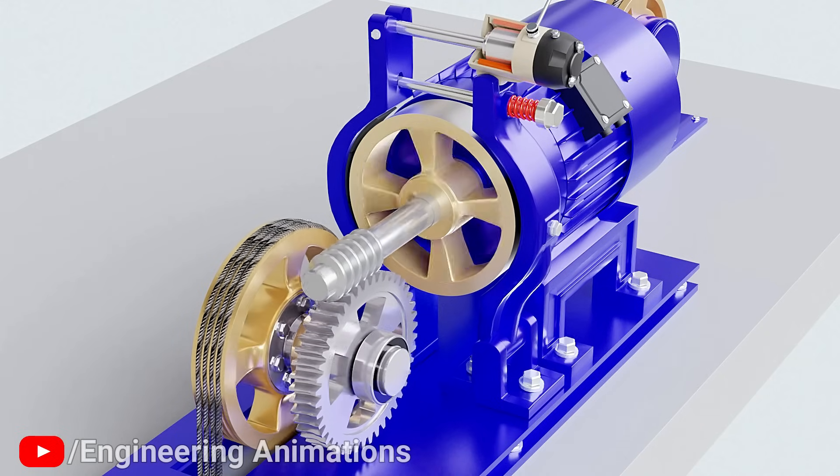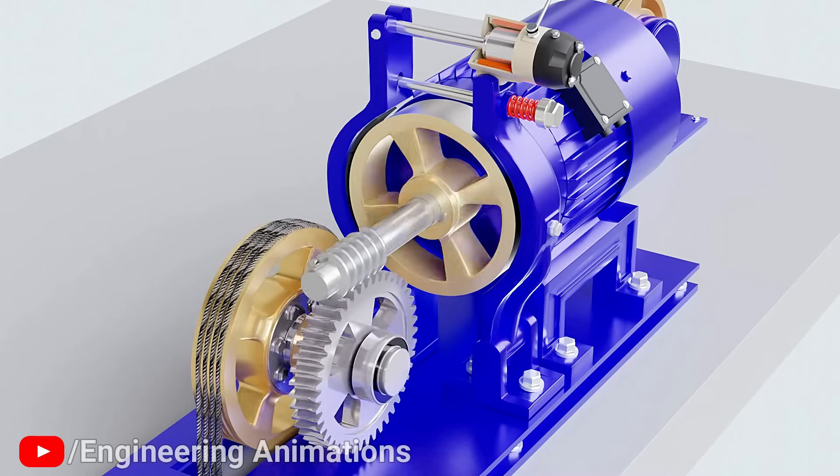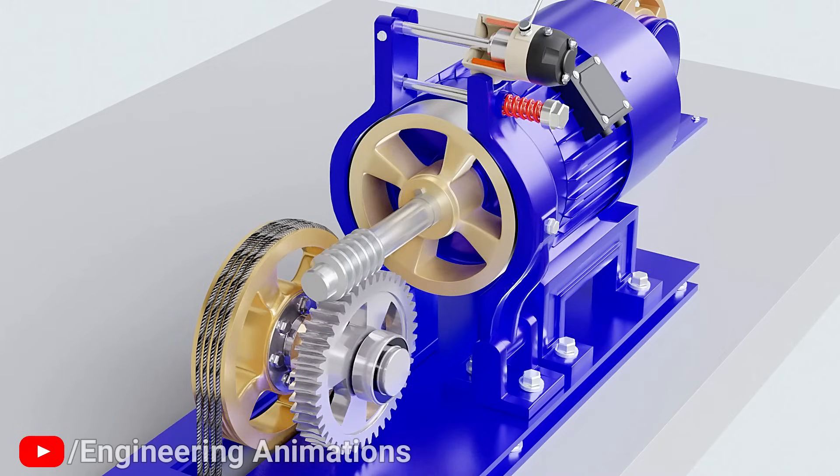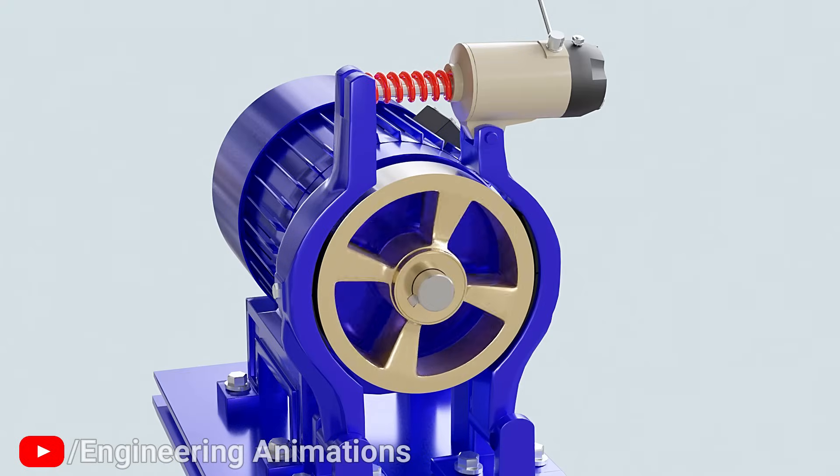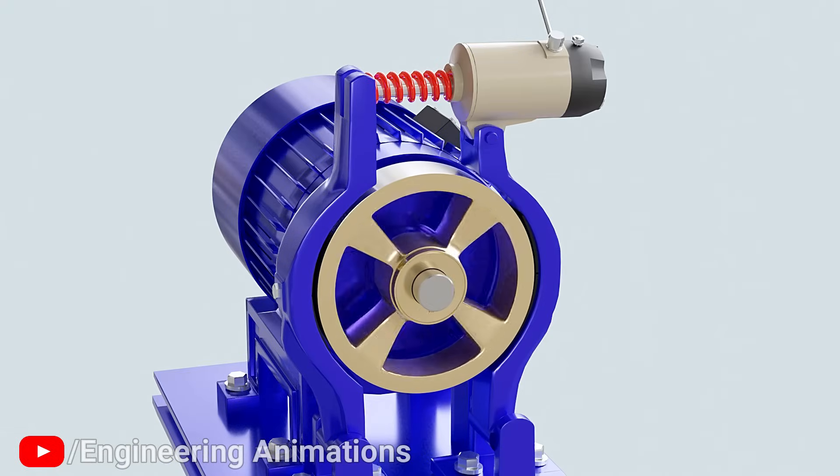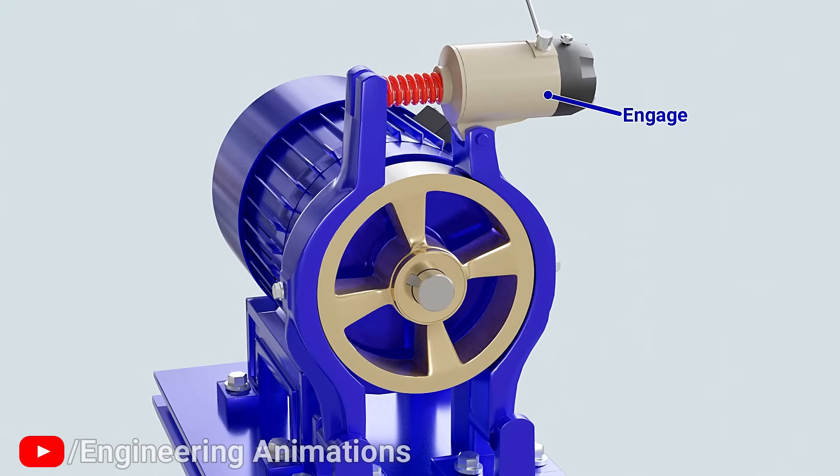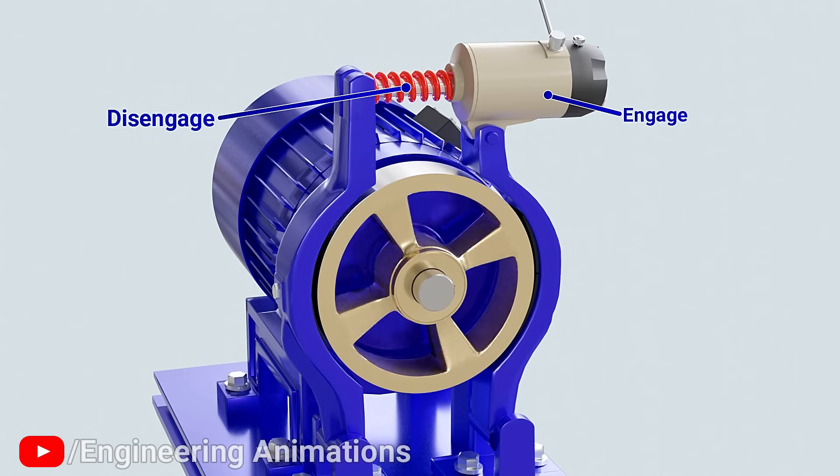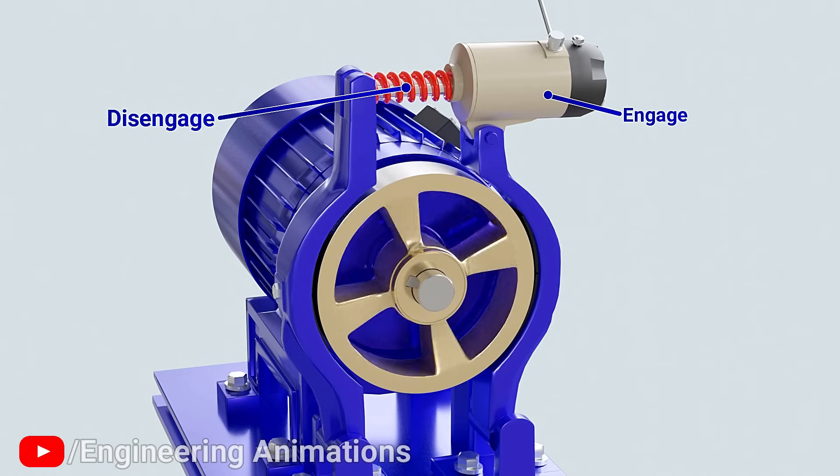While this setup seems like a normal electromagnetic braking system, it works in an opposite way in elevators. In a typical electromagnetic braking system, the electromagnet engages the brakes and the spring disengages it by retracting the brake arms to their initial position.